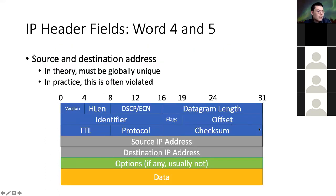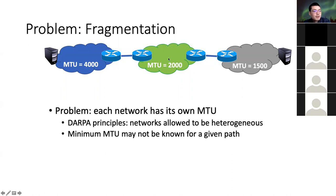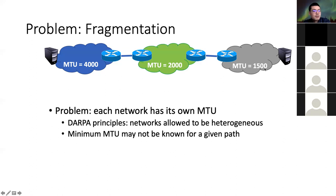IP needed fragmentation because of the maximum transmission unit (MTU). Assume you pass through different routers: one network allows MTU of 4,000 bytes, but after that a backbone router only allows 2,000 bytes — so a datagram larger than 2,000 cannot pass. Another subnetwork may have MTU of 1,500. The DAPA principle is that we allow the network to be heterogeneous, meaning different subnetworks can have different MTU values. You have no control of that. That's why IPv4 needs this second row to handle fragmentation.